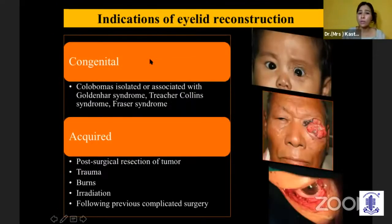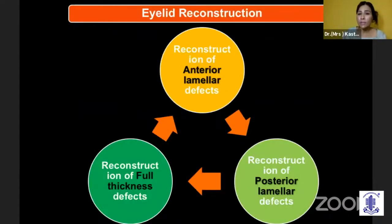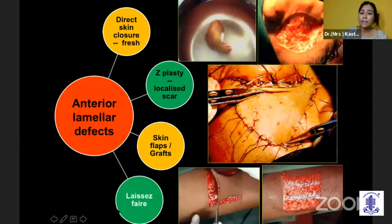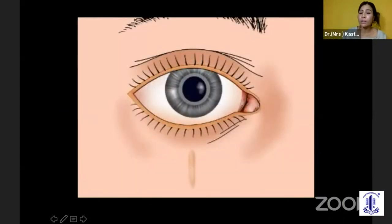When we talk about lid reconstruction, indications can be congenital or acquired. A very important point is the contralateral eyelid evaluation. We reconstruct the anterior lamella, posterior lamella, or full thickness. For the anterior lamella, the easiest option is laissez-faire — secondary healing. Other anterior lamella structures used for reconstruction are skin flaps and other small procedures.